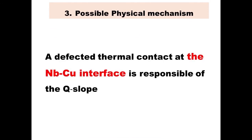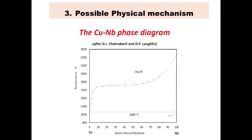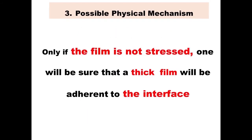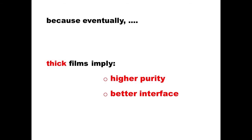A third possible physical mechanism is the one we heard from the previous talk by Sergio Valio: the niobium-copper interface is responsible for the Q-slope. The quality of the interface depends on film stress. Niobium and copper are not miscible at all up to temperatures around 1100°C. Only if the film is absolutely stress-free can one be sure to deposit a thick film that will be adherent to the interface. If you are able to make a thick film that is adherent to the interface, you can be sure there is zero stress. These considerations push toward trying thick films, which imply higher purity and better interface.